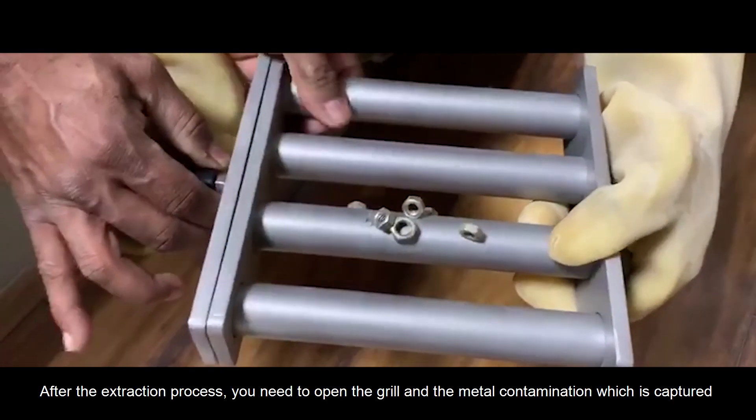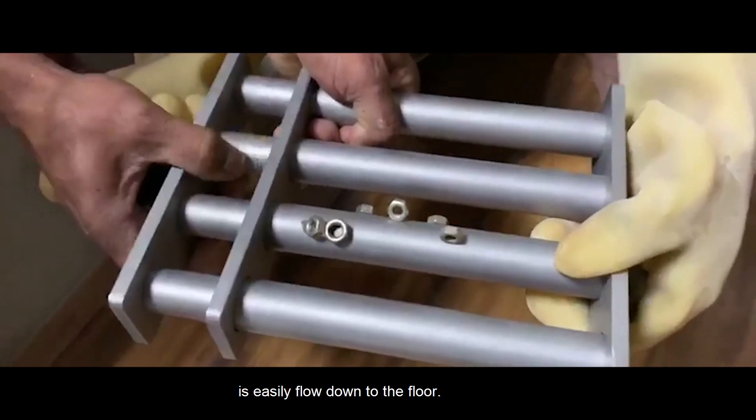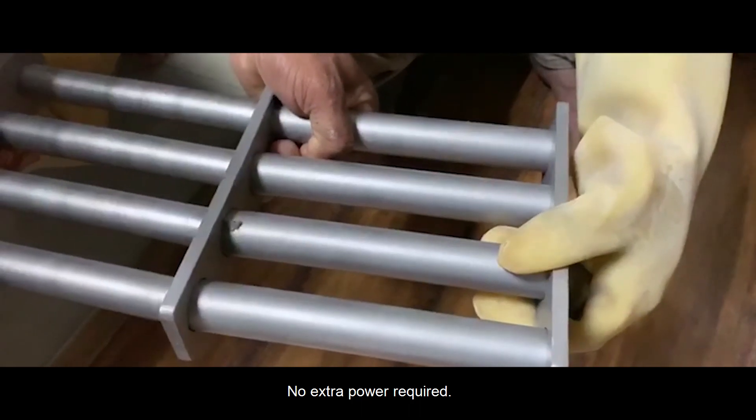After the extraction process, you need to open the grill and the metal contamination which is captured easily flows down to the floor. No extra power required.